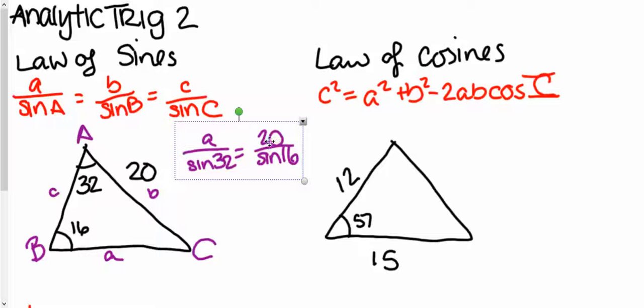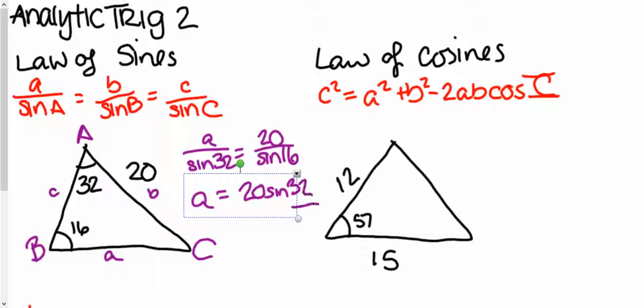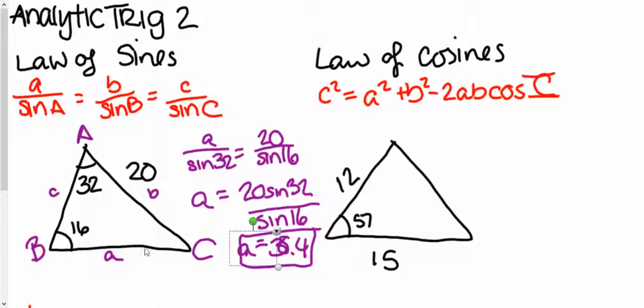Now, we can cross multiply and divide, so if we simplify this out, I get that A is 20 sine 32 over sine 16, which comes down, if you simplify everything, 20 sine 32 over sine 16 gives us 38.4, roughly. So that says that this side length is 38.4.